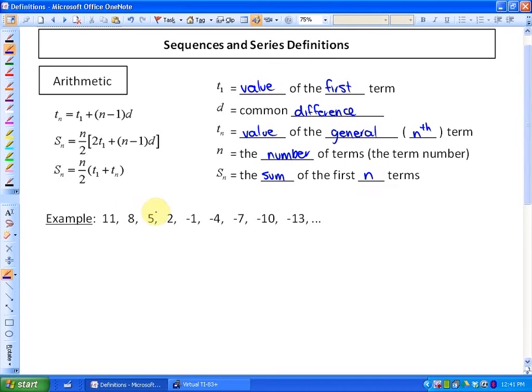So let me show you a few examples with this particular list of numbers. 11, 8, 5, 2, negative 1, etc. The first thing that I'll point out is that it's going down by 3s. That would be a common difference. So the common difference in this one would be negative 3 in this particular case. The value of the first term, or in other words, T1, is 11. So in this particular case, the first term would be 11.